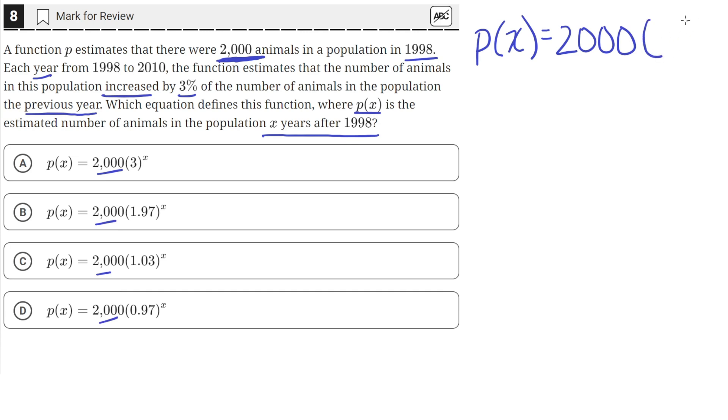Then the base of the exponential function, which is what goes in the parentheses here, is the rate of increase. So we're told that each year the population increases by 3% compared to the previous year. So each year the population of the previous year is multiplied by 1.03.